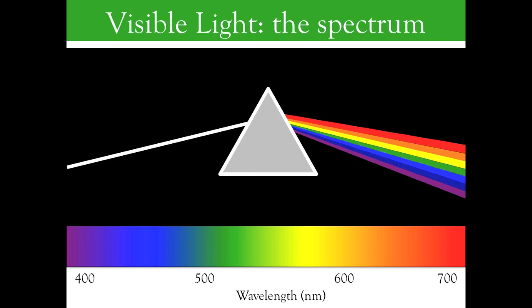Within this range, variation in wavelength translates to variation in color. Light with a wavelength near 400 nm appears purple, and light with a wavelength near 700 nm appears red.